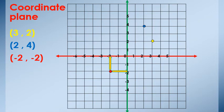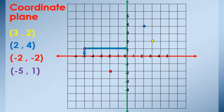Another point: join it with axis X at negative 5, and join it with axis Y at 1. Then the coordinate of this point is (negative 5, 1). Notice: we start with axis X. The first number is at axis X.